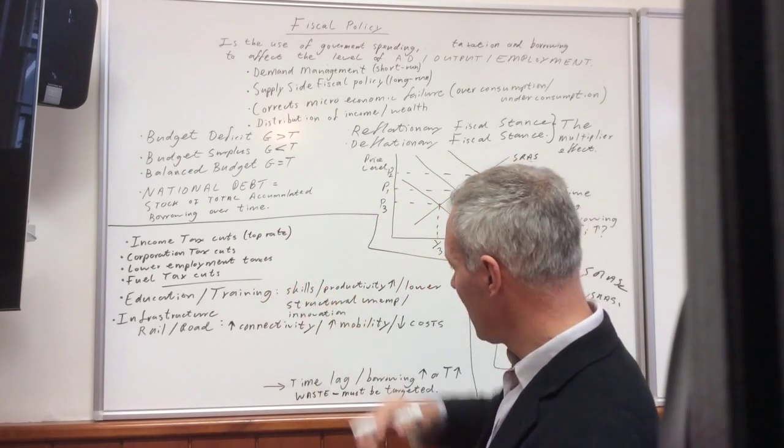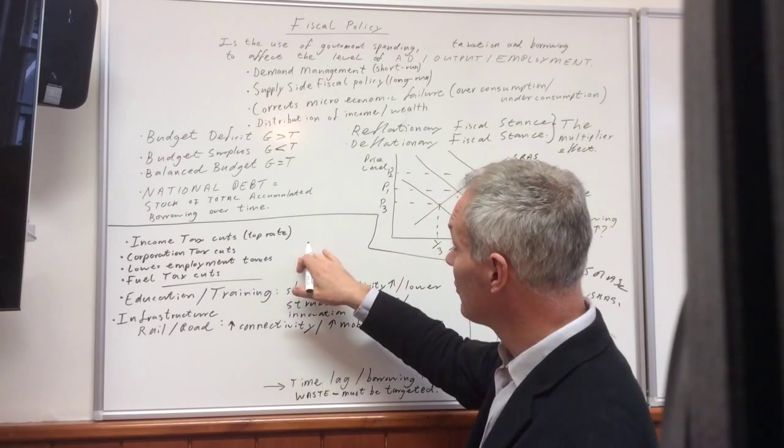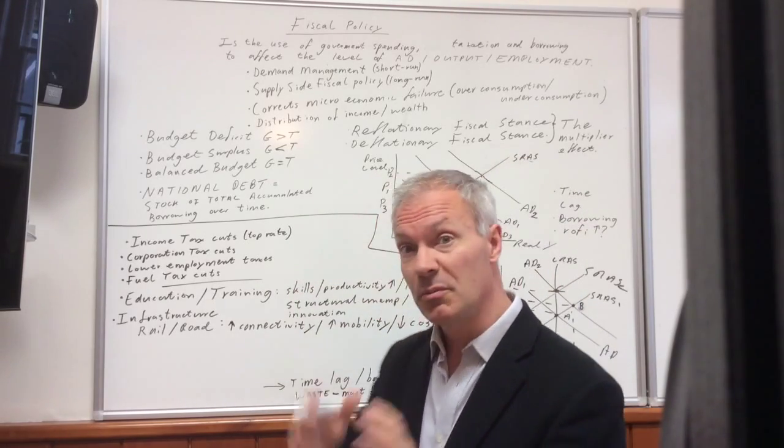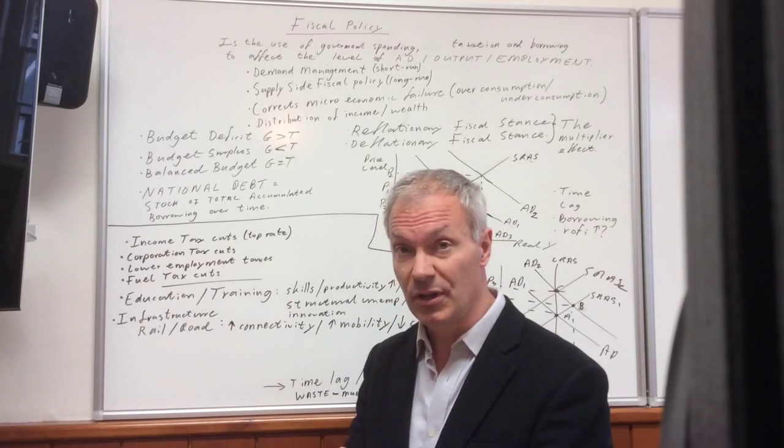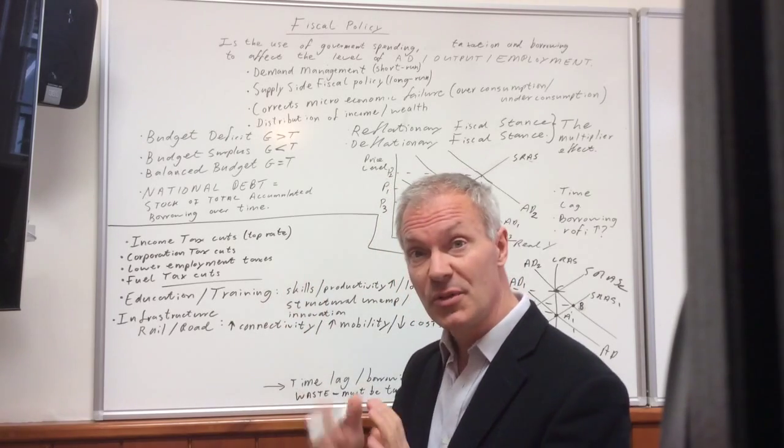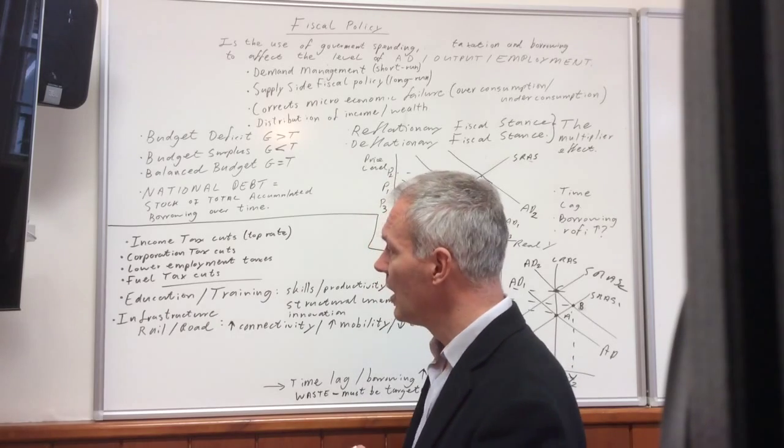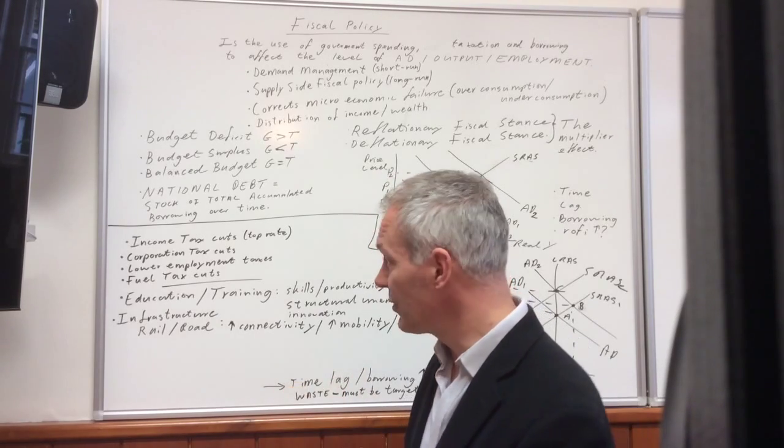Those are examples of tax cuts. And the other thing, of course, is if you cut taxes, then you might have to borrow more. Can the government do that? Or cut government expenditure, and there are going to be consequences for that as well, in terms of public services.